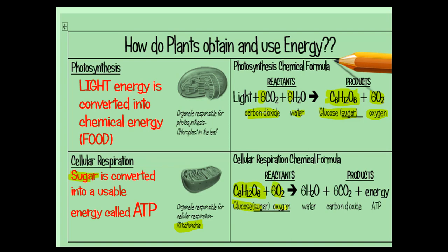Cellular respiration uses six oxygen molecules and breaks them apart along with glucose to give you six water molecules, six carbon dioxide molecules, and then that energy molecule ATP. So it breaks down the sugar and gives you water, carbon dioxide, and energy. This happens in our bodies and in plants. When we do cellular respiration, carbon dioxide is a byproduct — that's why we breathe out carbon dioxide.